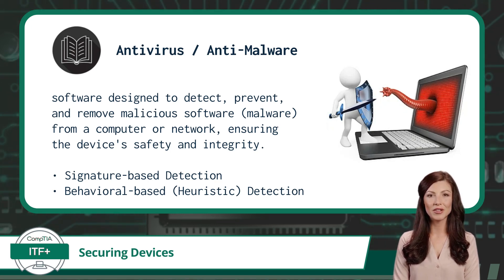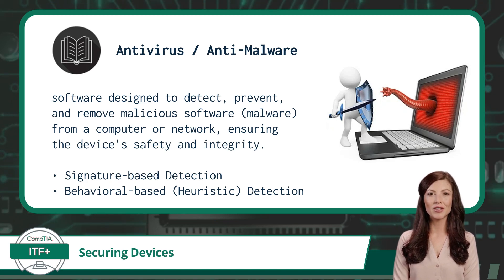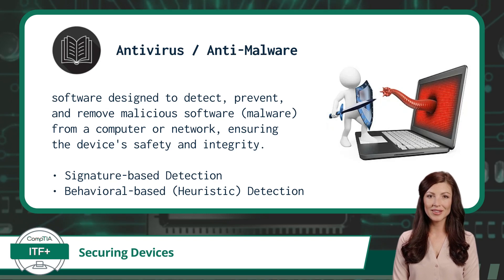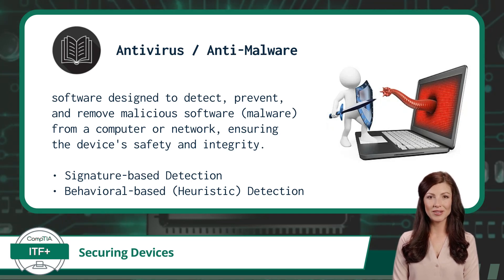As for behavioral-based threat detection, it observes the behavior of programs in real-time. It uses heuristics, which are sets of rules or algorithms, to analyze the actions of software and determine if they are typical of malicious programs. For instance, if a file tries to access a large number of files quickly or attempts to hide its presence, it might be flagged as suspicious. This method is particularly useful for detecting new or previously unknown malware that doesn't have a known signature yet. In essence, while signature-based detection checks for known threats, behavioral-based detection uses heuristics to predict and catch new or evolving threats based on their actions.